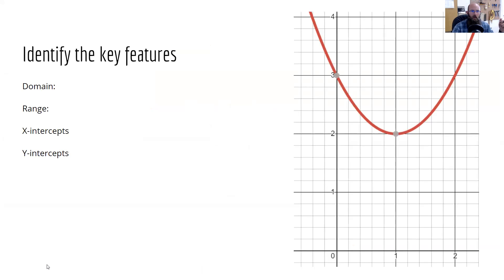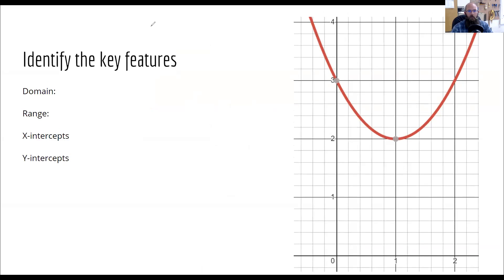All right, so here we're talking about the key features of functions as they relate to this particular graph that you'll see on your screen. The first one is the domain. There are a ton of different ways of writing this, and that's some of the things I've been showing you in class. First thing is, it's a parabola — I cut off the graph a little bit, but there are ends and these keep going forever and ever.